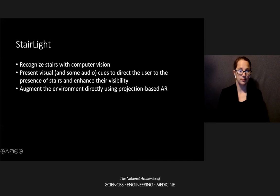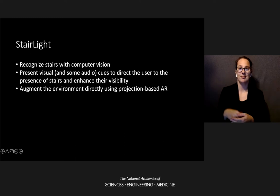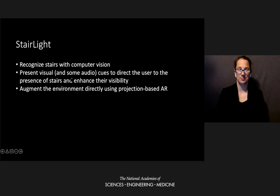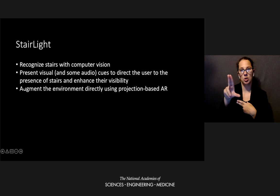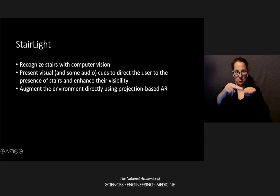To address the challenge of navigating stairs, we designed a system called StairLight. StairLight is an augmented reality system that recognizes stairs with computer vision — taking advantage of computer vision to compensate for the perception difficulties the user encounters — and then presents visual and also some audio cues to enhance the salient information for the user. In this case, that information is the edges of the stairs, enhancing their visibility with augmented reality.